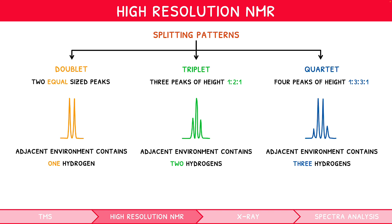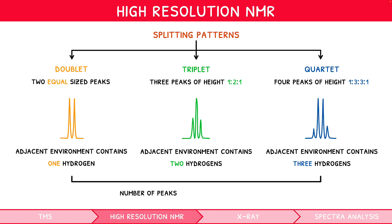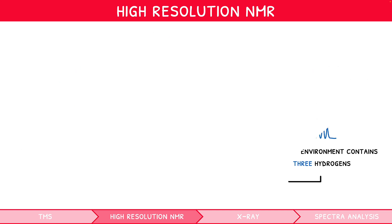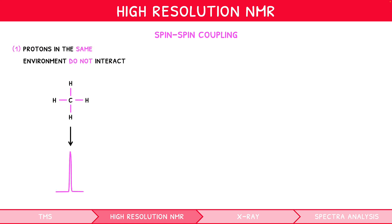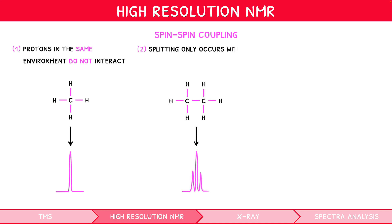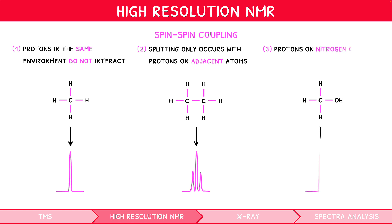You have likely spotted a common pattern: the number of split peaks is always one greater than the number of hydrogens in the adjacent environment. Whilst not a commonly tested concept, you should understand that splitting is formally defined by the three rules of spin-spin coupling. Protons in the same environment do not interact as they are chemically equivalent; splitting generally only occurs with protons on adjacent atoms; and protons attached to a nitrogen or oxygen do not split or cause splitting, i.e. OH peaks will always appear as a single clear peak.